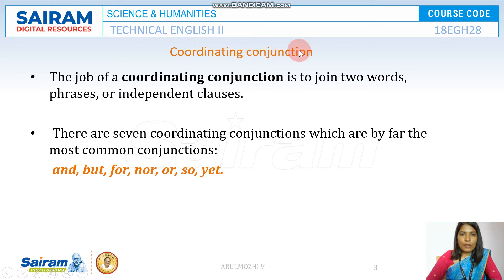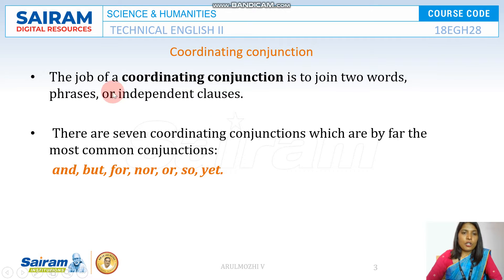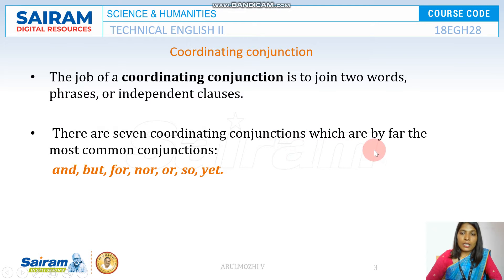What is a coordinating conjunction? The job of a coordinating conjunction is to join two words or phrases or two independent clauses. There are seven coordinating conjunctions which, in an acronym, are called FANBOYS: for, and, nor, but, or, yet, so.